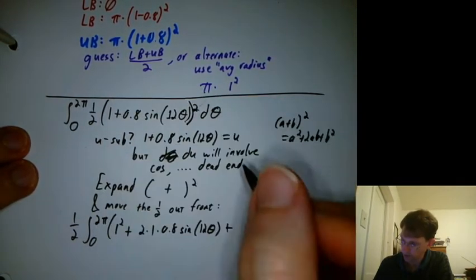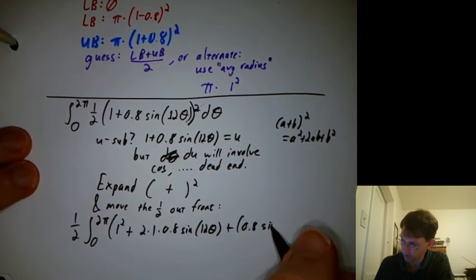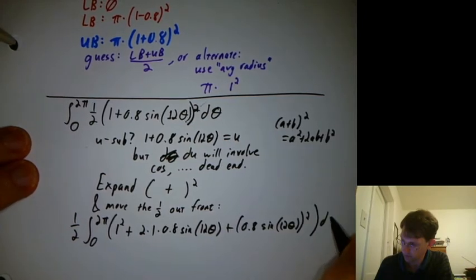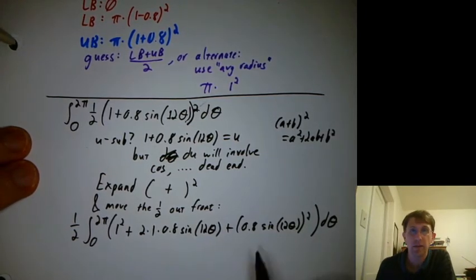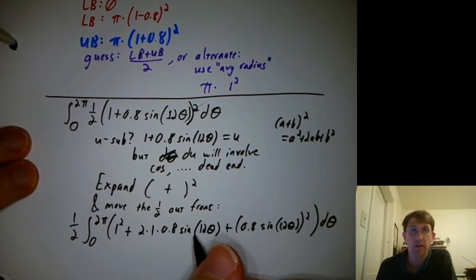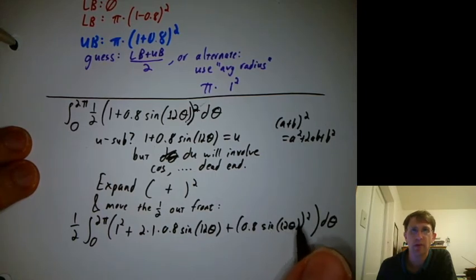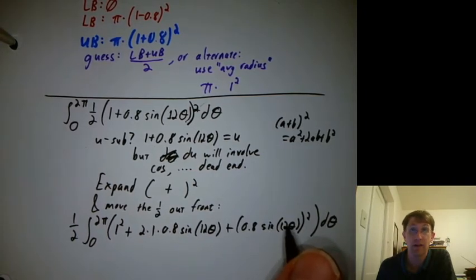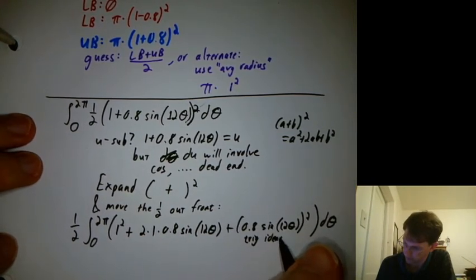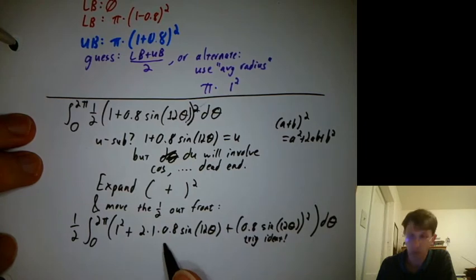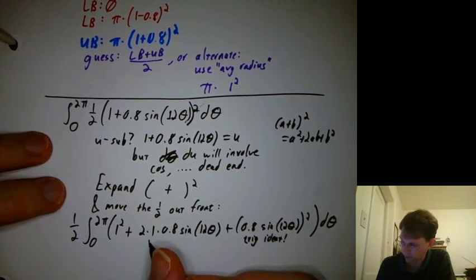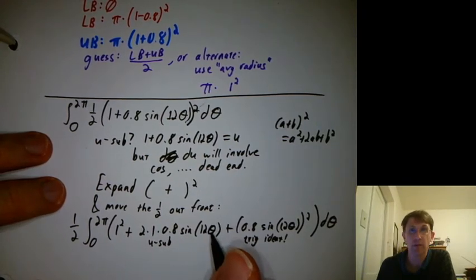Plus that term squared, d theta. Well at least this one is just a plain old sine integral and this one is a square of a sine, we're going to need a trig identity. This one we could do a u substitution on it or if we remember that shortcut rule when all we have is a simple frequency.